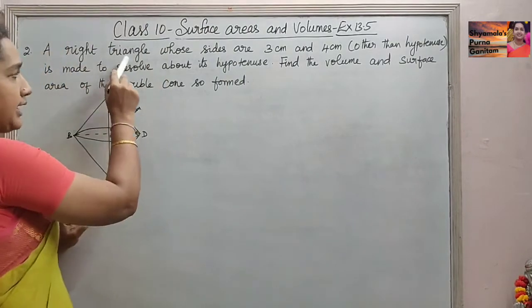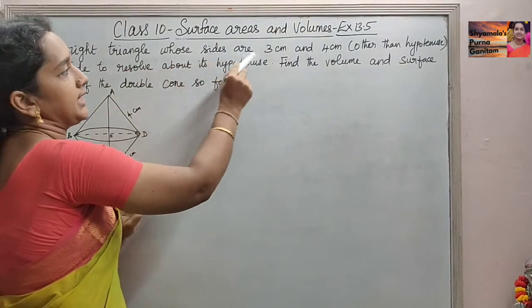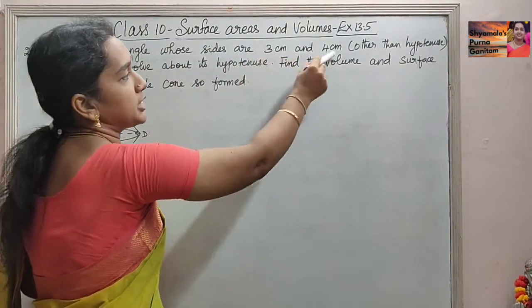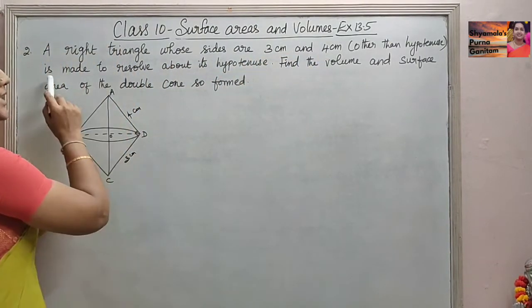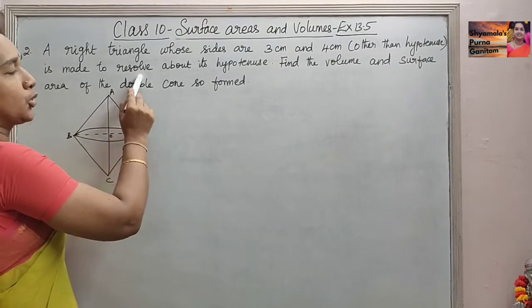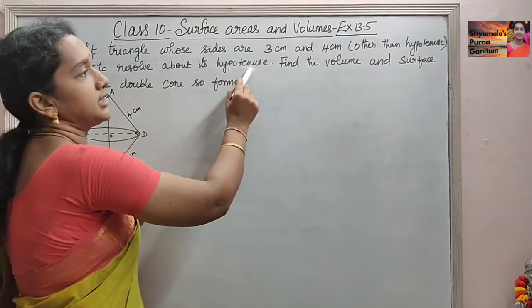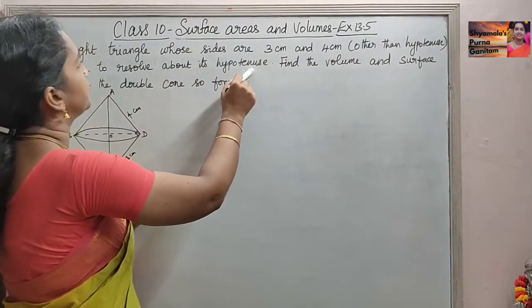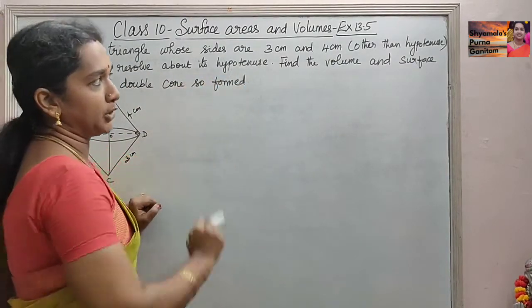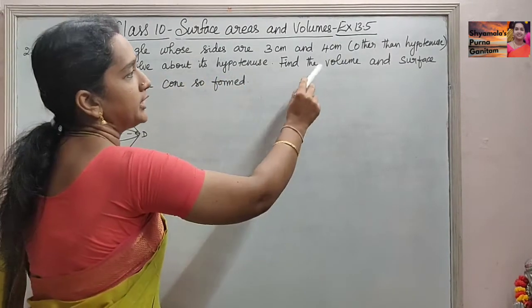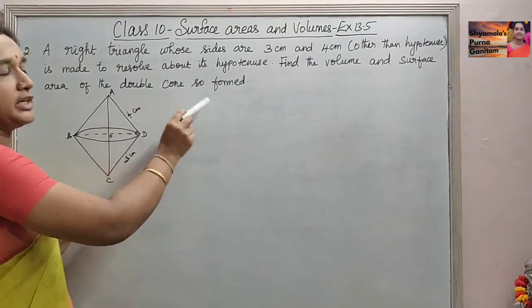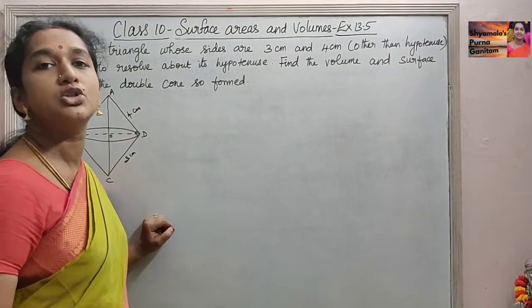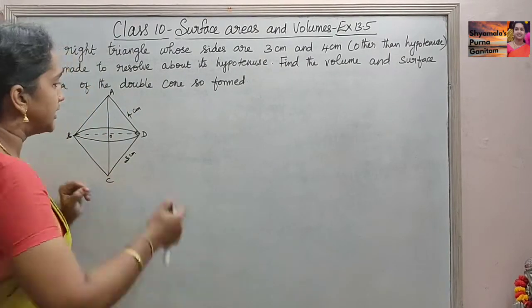A right triangle whose sides are 3 cm and 4 cm is made to revolve about its hypotenuse. Find the volume and surface area of the double cone so formed.